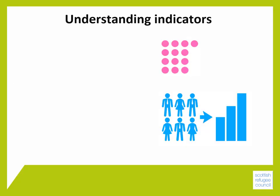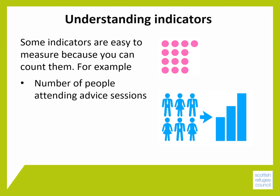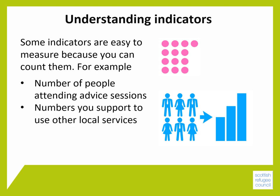It's important to understand that there are different types of indicators. Some indicators are easy to measure because you can count them and show them to others — for example, the number of people attending your advice sessions, or the numbers your project supports to use other local services. These are known as hard indicators, and the numbers give a very clear picture to people about what is happening.